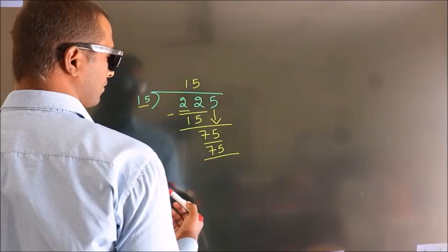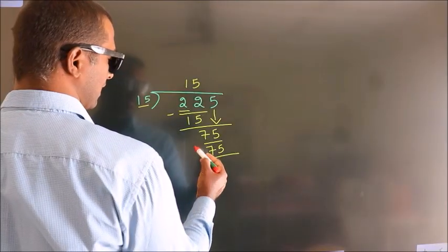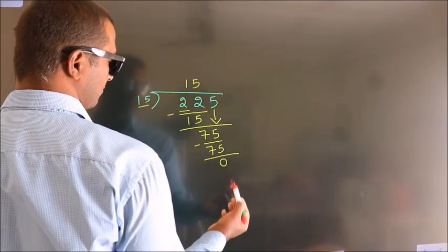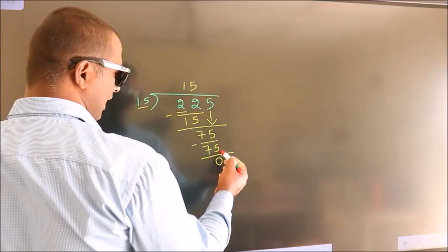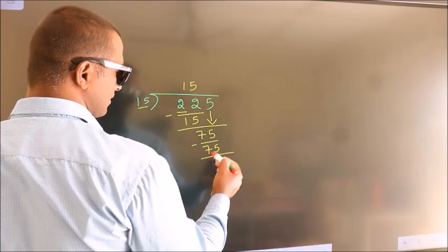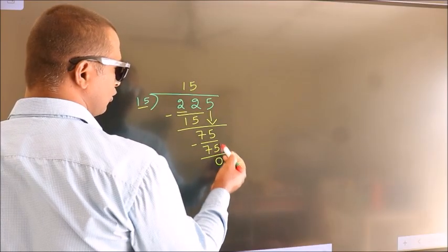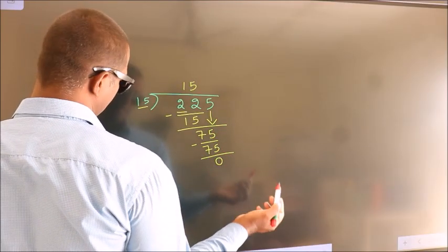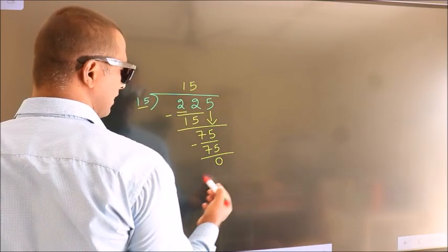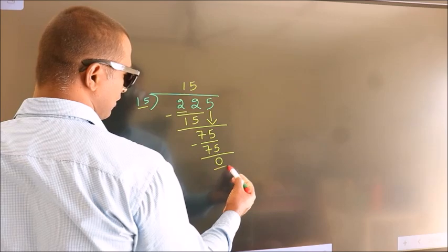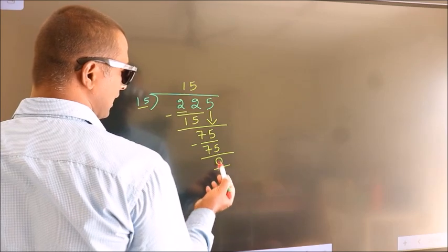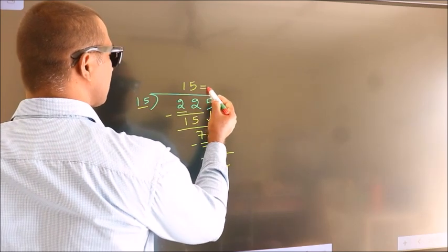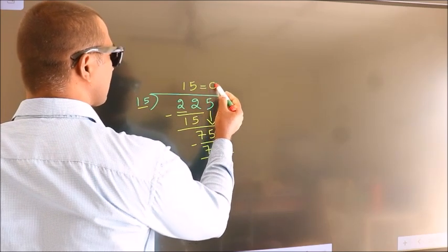Now we subtract and we get 0. After this, there are no more numbers to bring down. We got remainder 0, so this is our quotient.